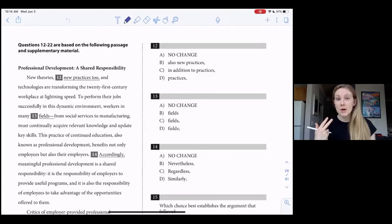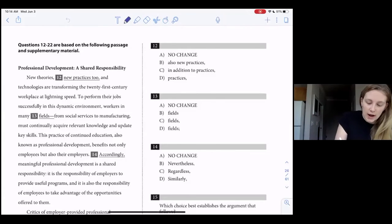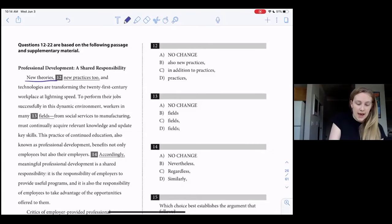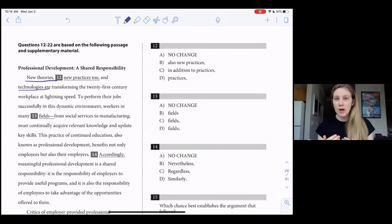Okay, and anytime we're dealing with a list, it needs to be in parallel, meaning that every item in the list should be in the same format. So I have new theories, whatever the second item is going to be, and then technologies. Now, if all of these are new, I don't need to indicate that each one is new by repeating the word. Okay, and so I can get rid of no change for that reason.